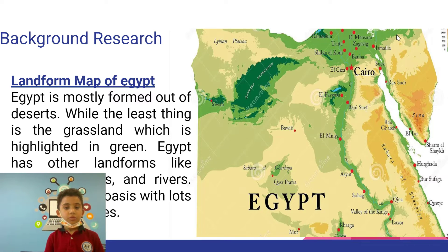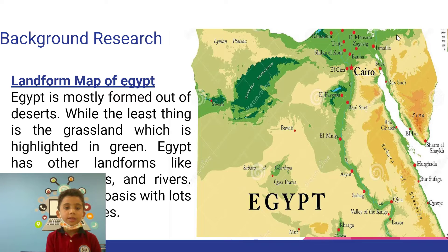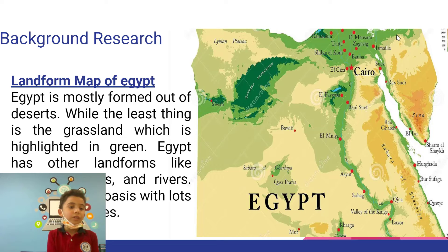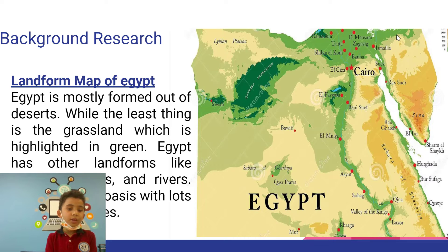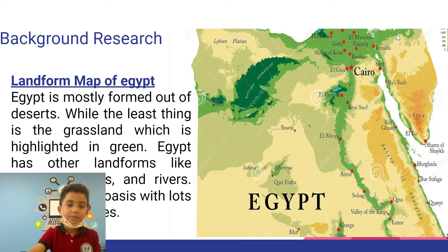Background Research: Egypt is mostly formed out of deserts, while the least common landform is grassland, highlighted in green. Egypt has other landforms like mountains, hills, and rivers. Egypt also has oases, lots of land resources, and many other types of landforms.